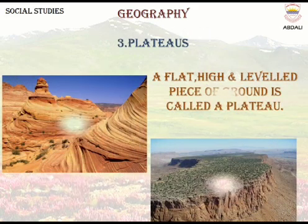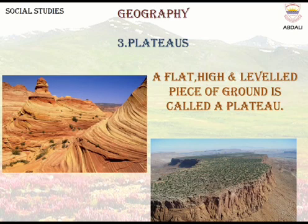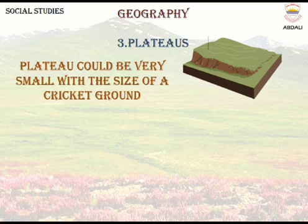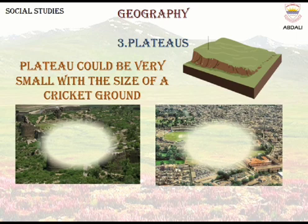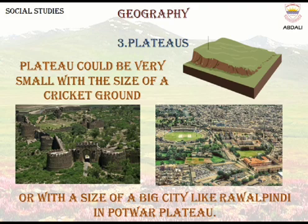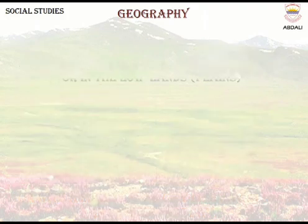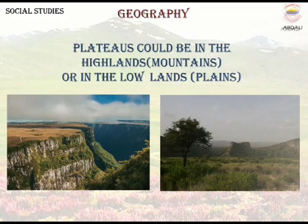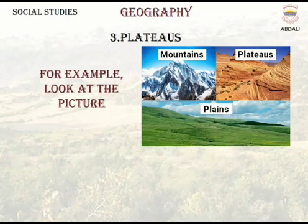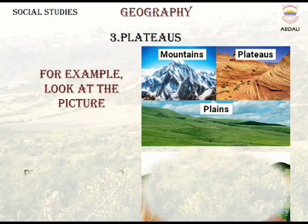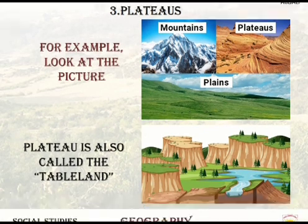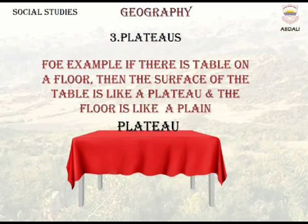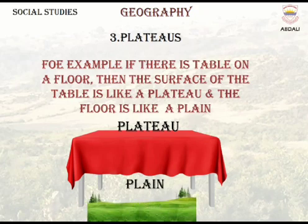Plateaus. A flat, high, and leveled piece of ground is called a plateau. A plateau could be very small with the size of a rocky ground, or as large as a big city like Rawalpindi in the Potohar Plateau. Plateaus could be in the highlands and mountains, or in the lowlands and plains. Plateau is also called tableland. If there is a table on a floor, then the surface of the table is like a plateau and the floor is like a plain.